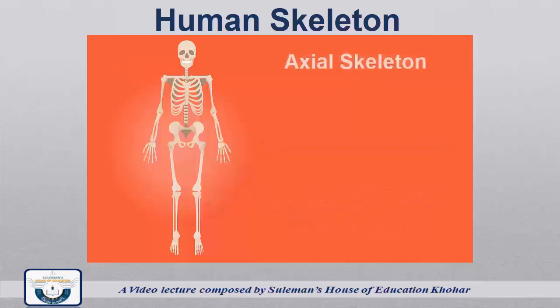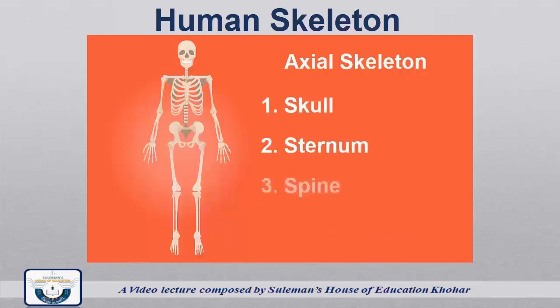Axial skeleton is basically the center of the skeleton and includes bones of the skull, sternum, spine, and ribs.